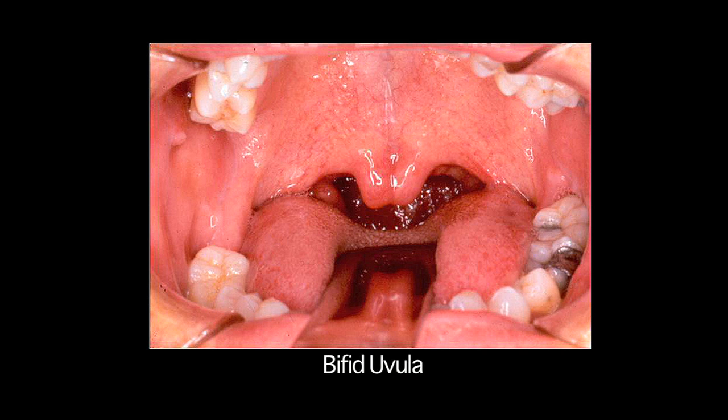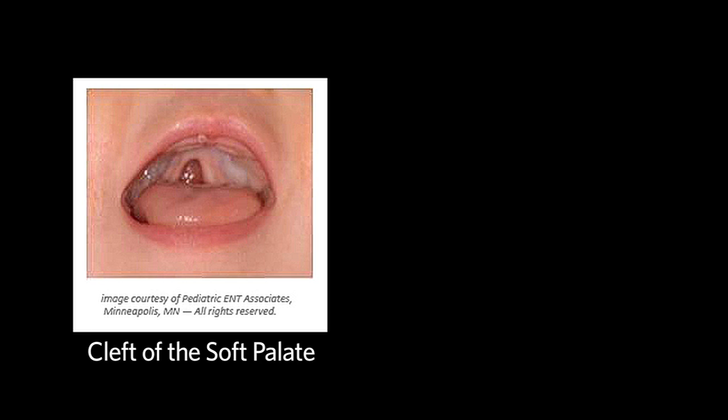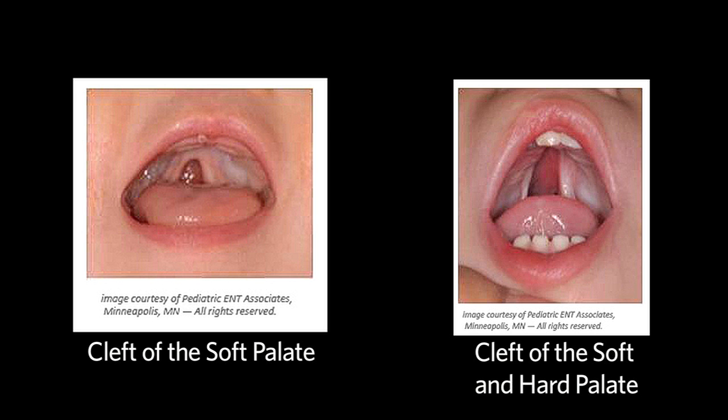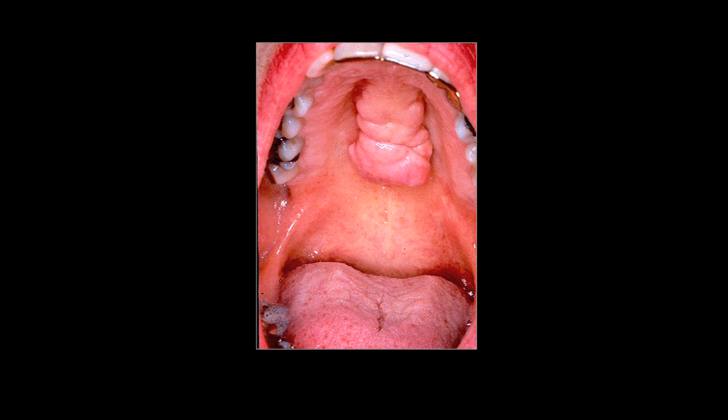On occasion the uvula may be bifid. In children, one may see clefts of the soft palate or both the soft and hard palate. On the hard palate, one may see a bony prominence known as the torus palatinus.